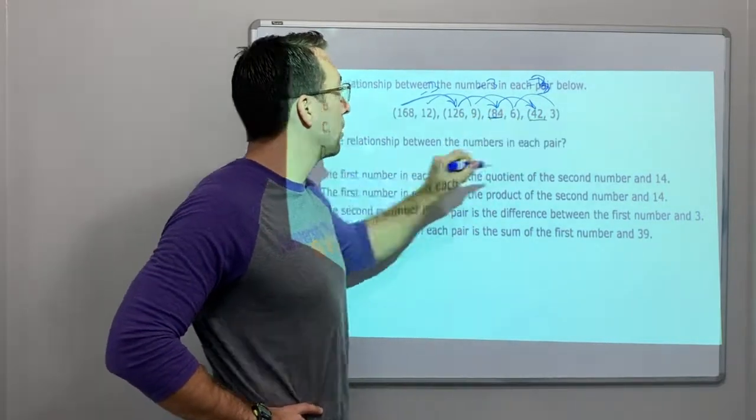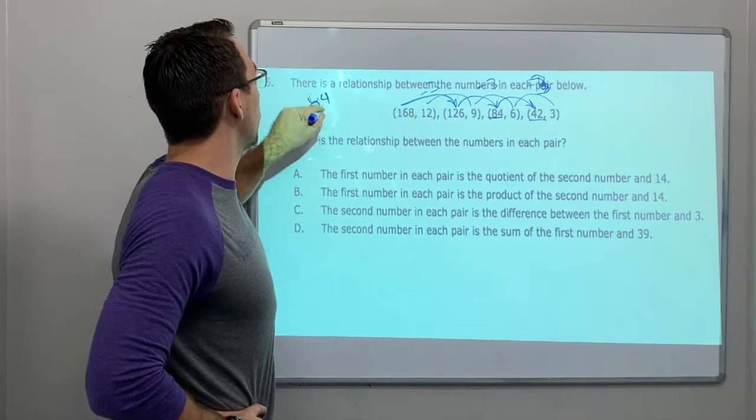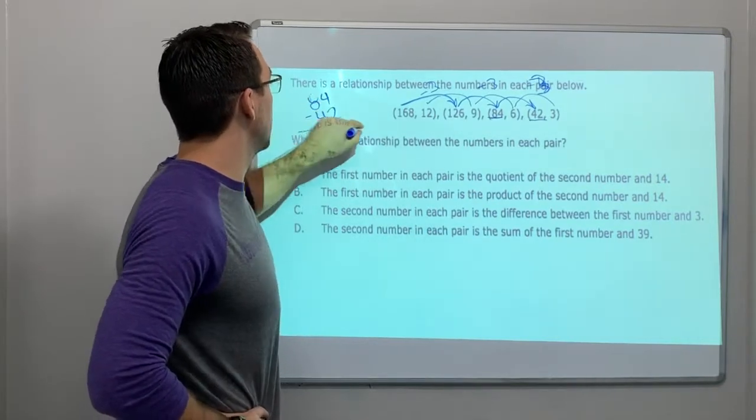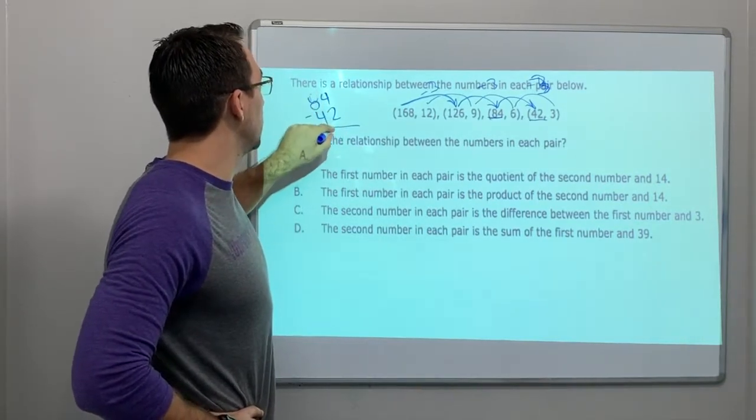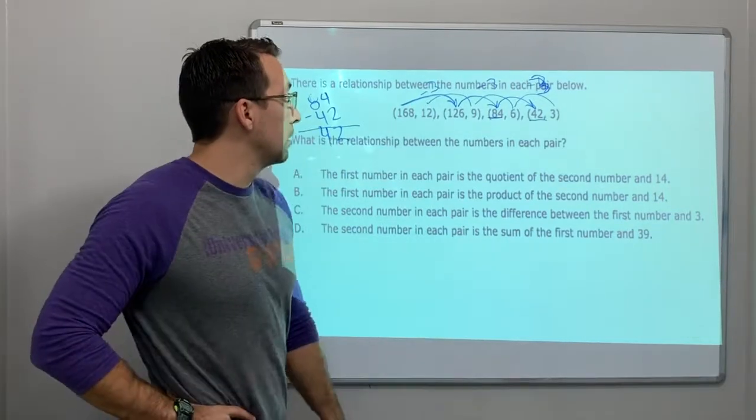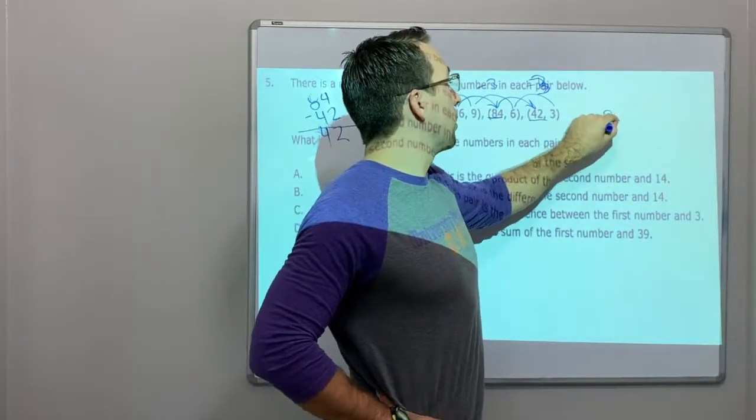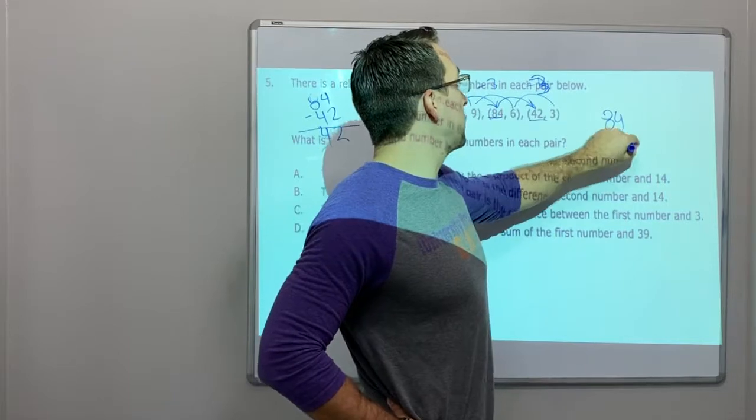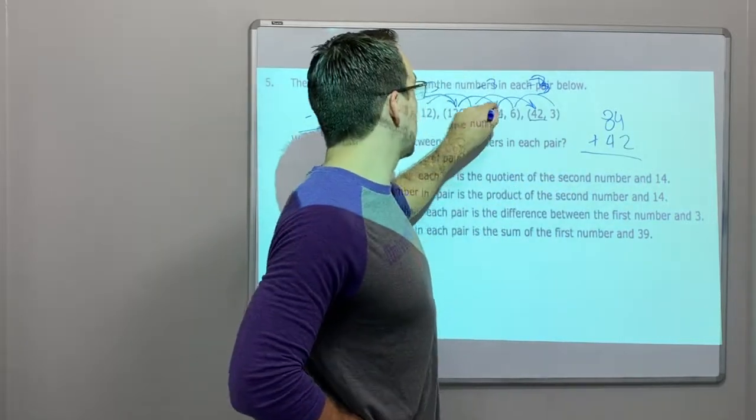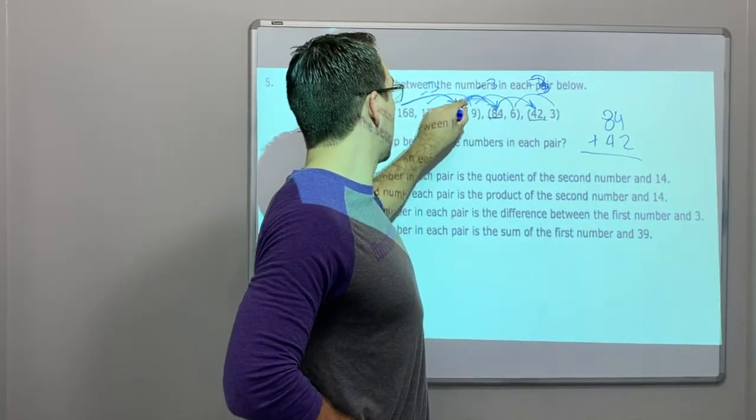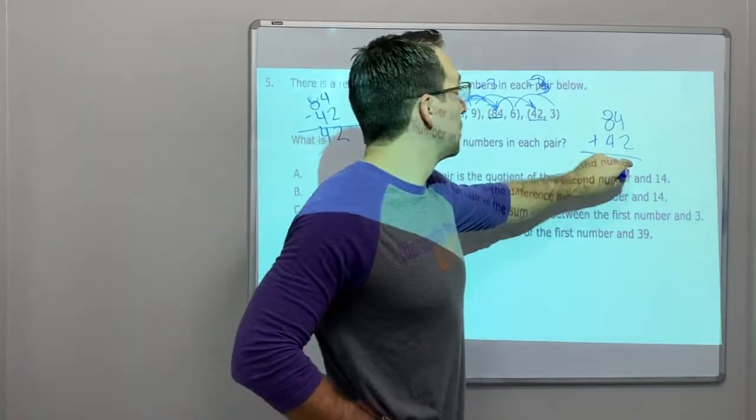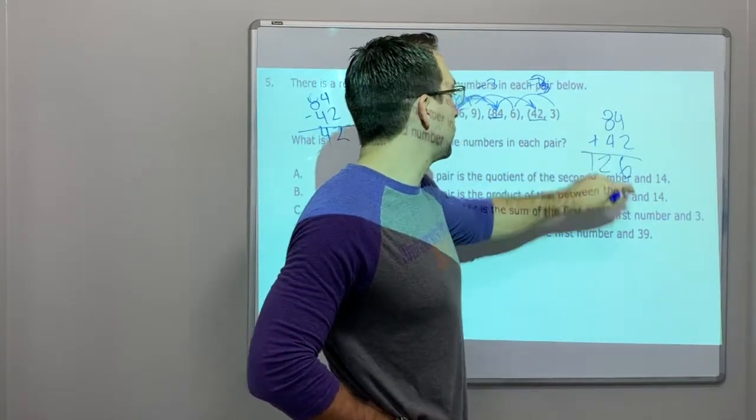84 minus 42 is 2 and 4 is 42. So let's go 84 plus 42 equals, and that's this direction. 84 to 126, 6, 8, yeah 126. That's it.